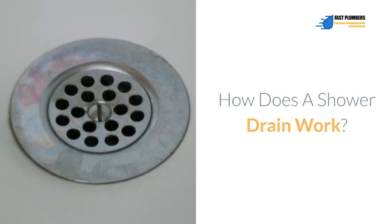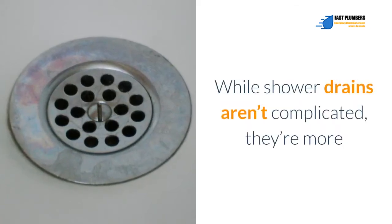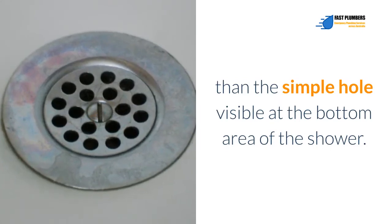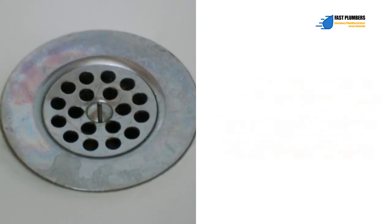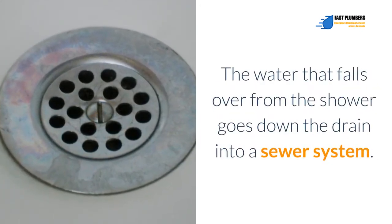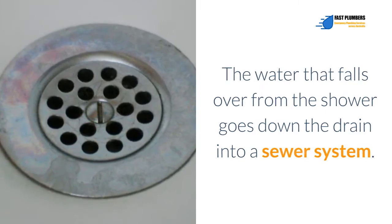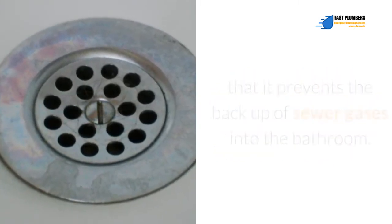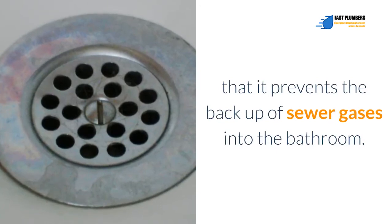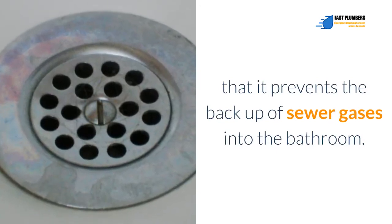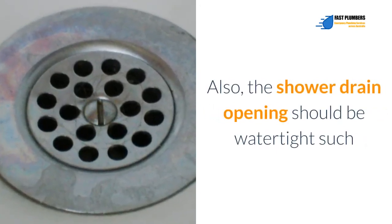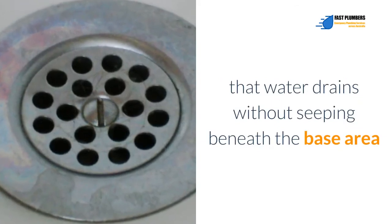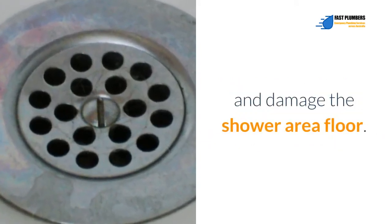How does a shower drain work? While shower drains aren't complicated, they're more than the simple hole visible at the bottom area of the shower. The water that falls over from the shower goes down the drain into a sewer system. At the same time, the drain is designed in such a way that it prevents the backup of sewer gases into the bathroom. Also, the shower drain opening should be watertight such that water drains without seeping beneath the base area and damaging the shower area floor.